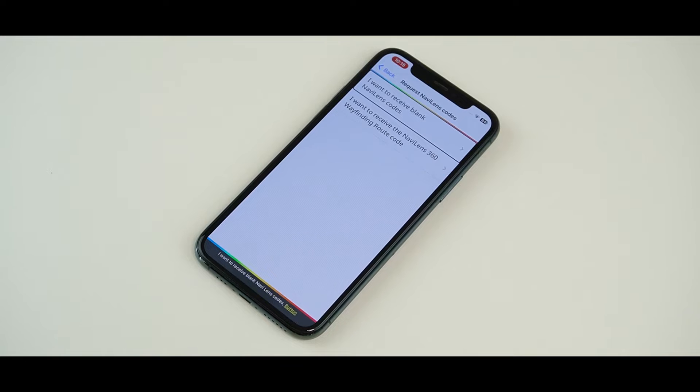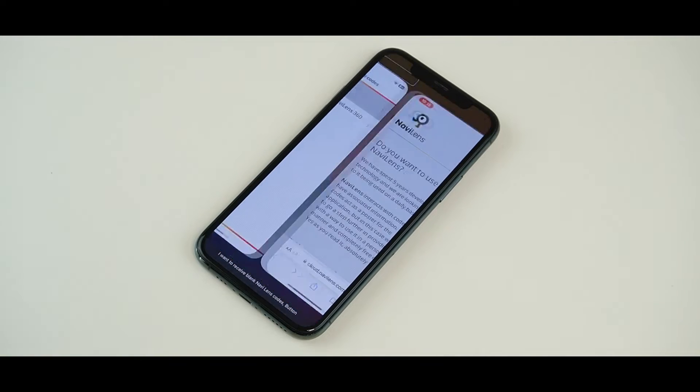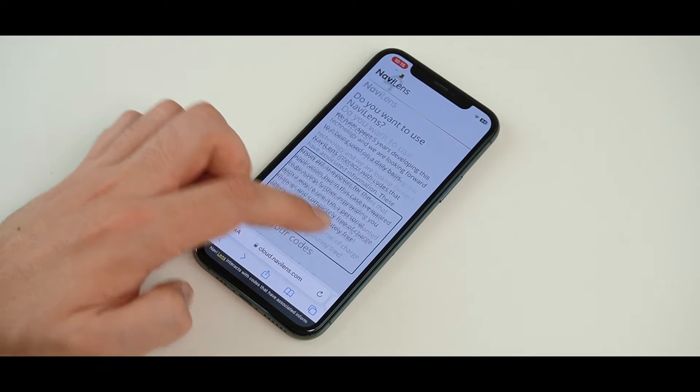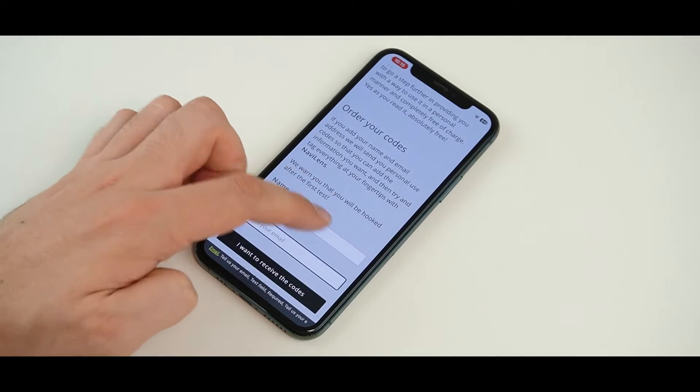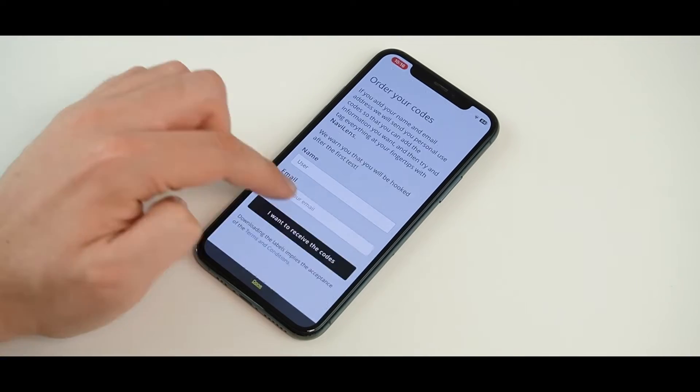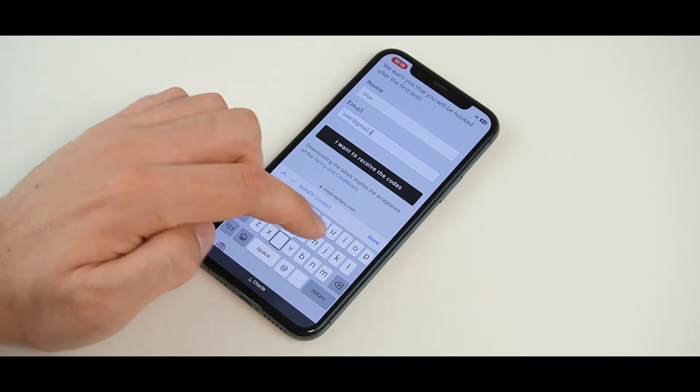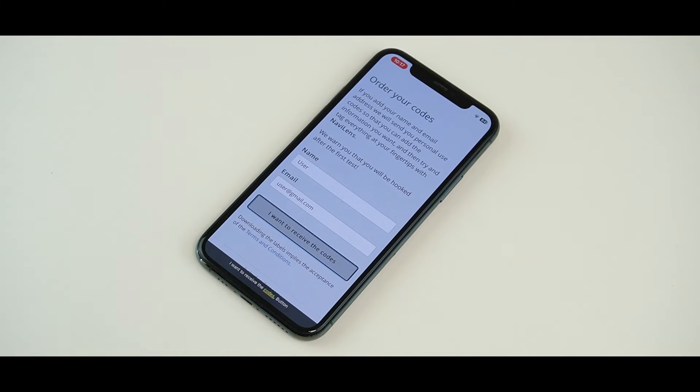Now you're able to choose I want to receive blank NaviLens codes. After reading the information, you need to introduce your name and email address and then click on I want to receive the codes.